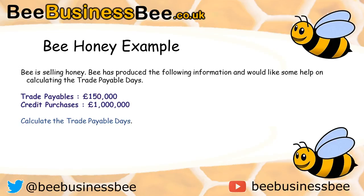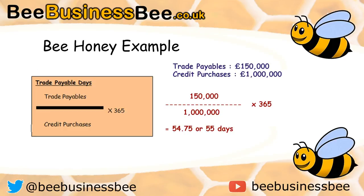I'd like you to try and answer the question on screen — pause the video while you do that. Here is the answer: trade payables of £150,000 divided by £1 million, times 365 days, gives you 54.75, or rounded to the nearest day, 55 days.